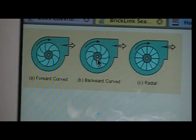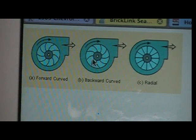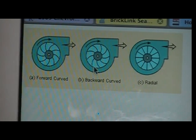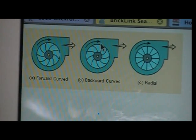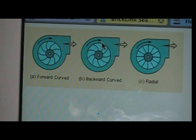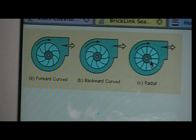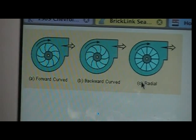The backward curved type of fan blades are for higher pressure and lower volume, such as turbochargers and compressors. And the radial is basic and gives you kind of a balance of both.